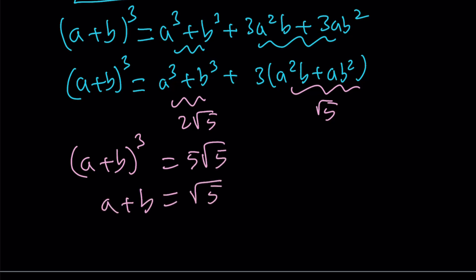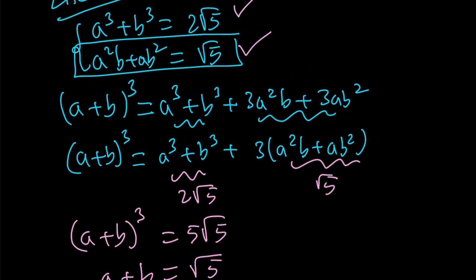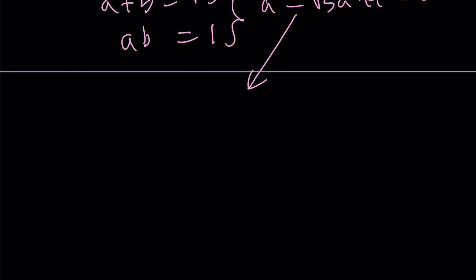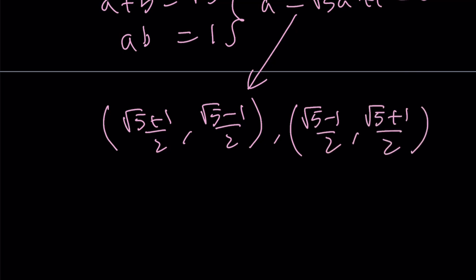And from here, from the second equation, we can divide both sides by a+b. And we get ab = 1. And again, this gives us the same equation as before. What was that equation? It was a² - √5a + 1 = 0. And then from here, the solutions are going to be (√5 + 1)/2, (√5 - 1)/2, and (√5 - 1)/2, (√5 + 1)/2. And this brings us to the end of this video.